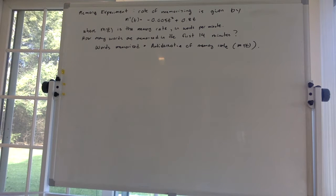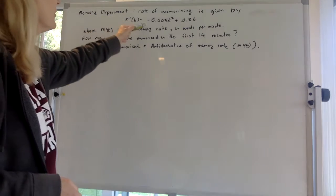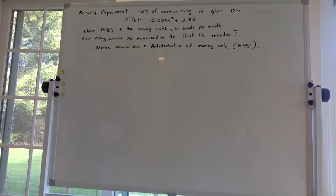Hi everybody. In this problem we're talking about a memory experiment and they give you an equation for the rate of memorizing, and they denote it with m'(t), and here it is right here. It's equal to -0.005t² + 0.8t, where m'(t) is the memory rate in words per minute. So the question is how many words are memorized in the first 14 minutes?